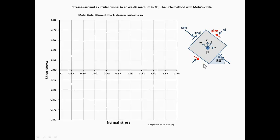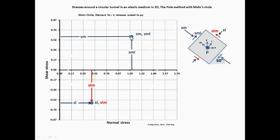Draw a diagram with the normal stress as abscissa and the shear stress as ordinate. The scale of abscissa and ordinate must be identical. In the diagram, enter the stresses as points with the coordinates of normal and shear stress. Connect the two stress points. The center of Mohr's circle is the intersection of this connection line with the abscissa. Mohr's circle is now defined by its center and radius.